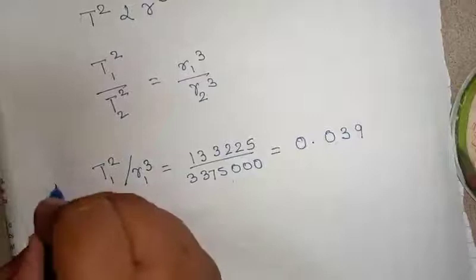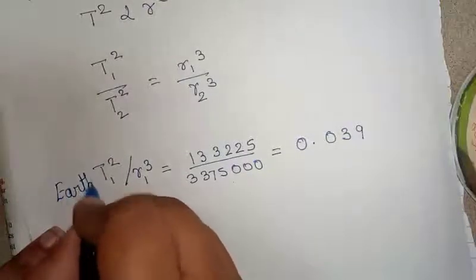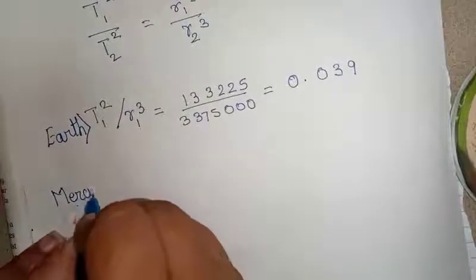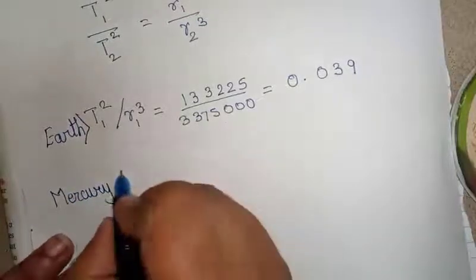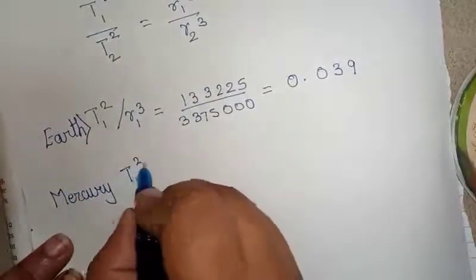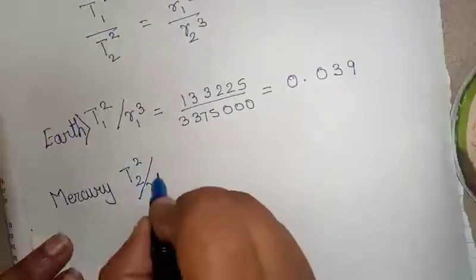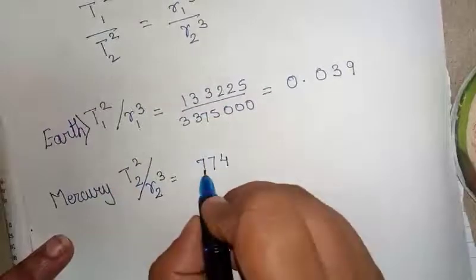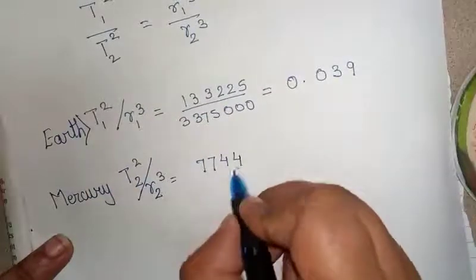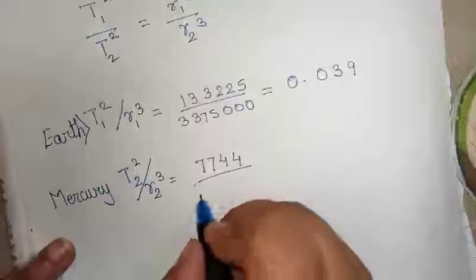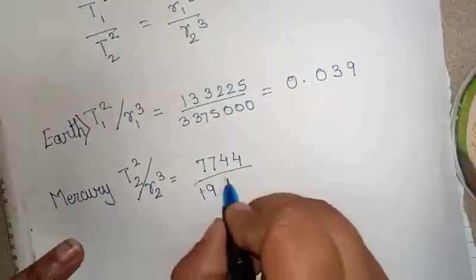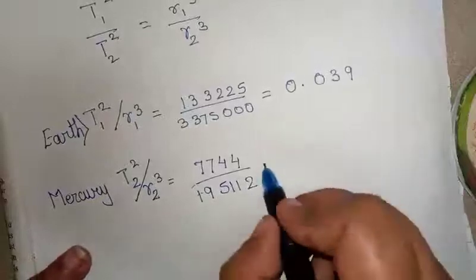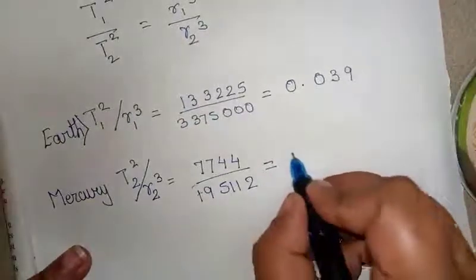Let's see with Mercury. When we take Mercury, we are taking T₂² by r₂³, which is 7,744 divided by 195,112, and the value which we get after division is 0.039.